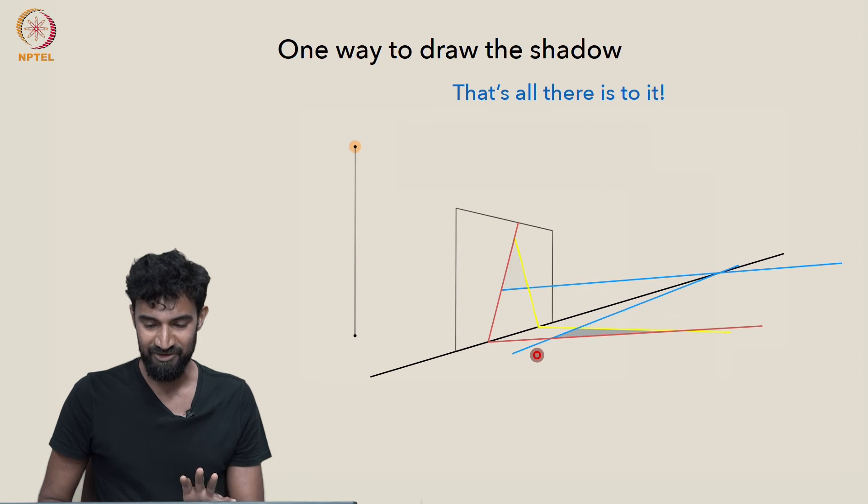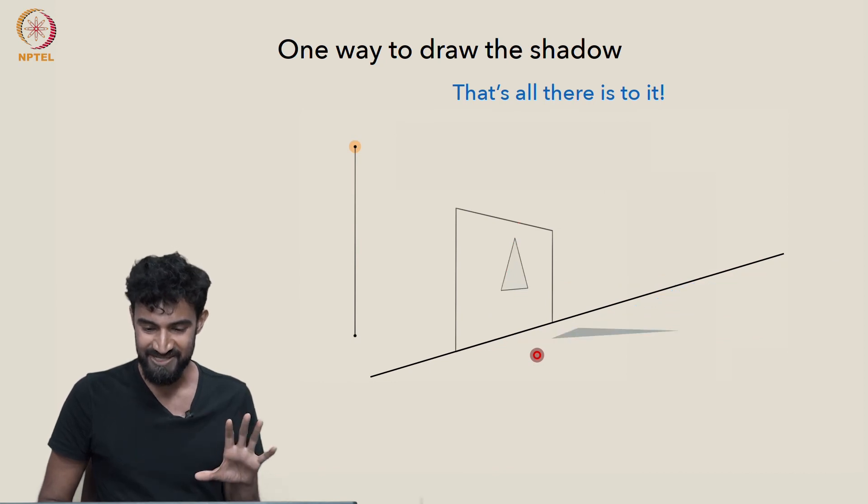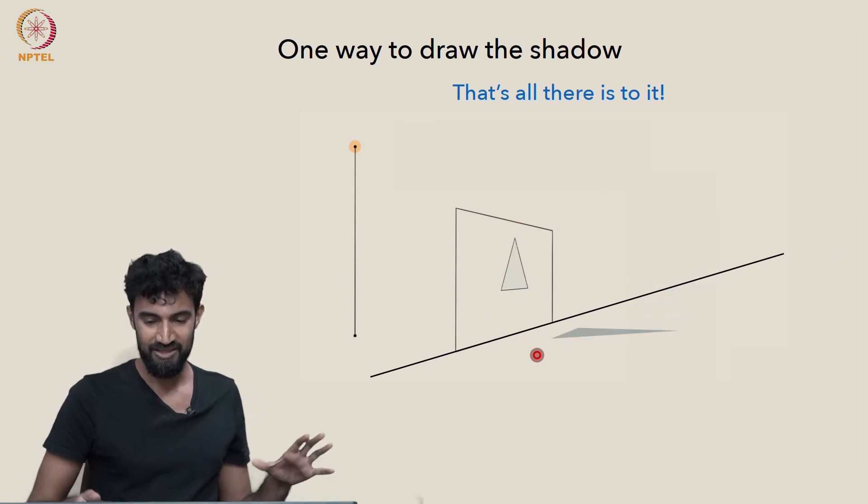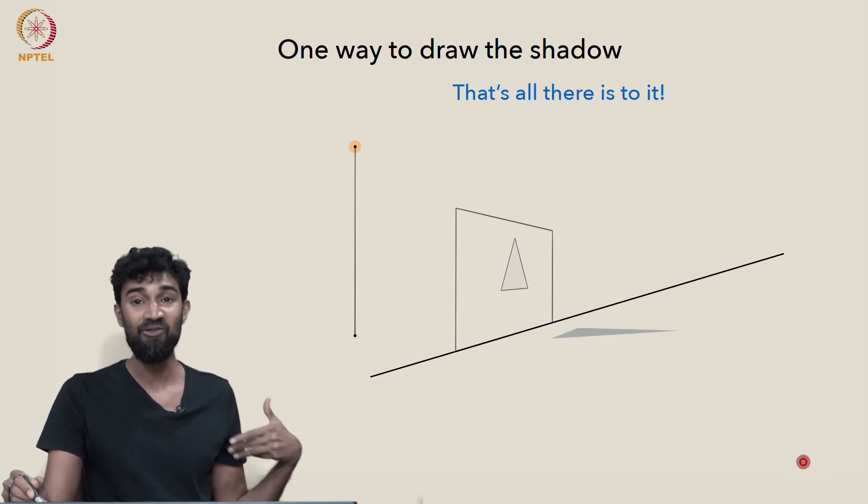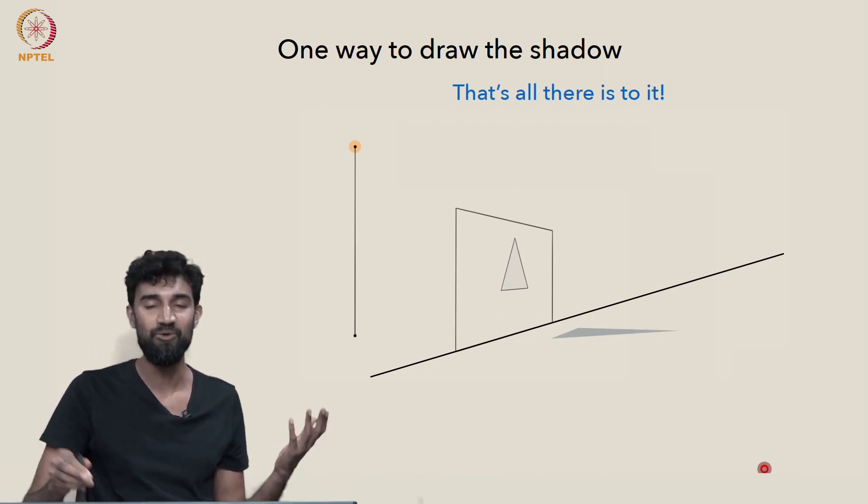And let's erase some of our extraneous lines just to get a better view. You can nicely see there's the triangle, there's its shadow. So of all the millions of possibilities, we figured out which one is the correct one.